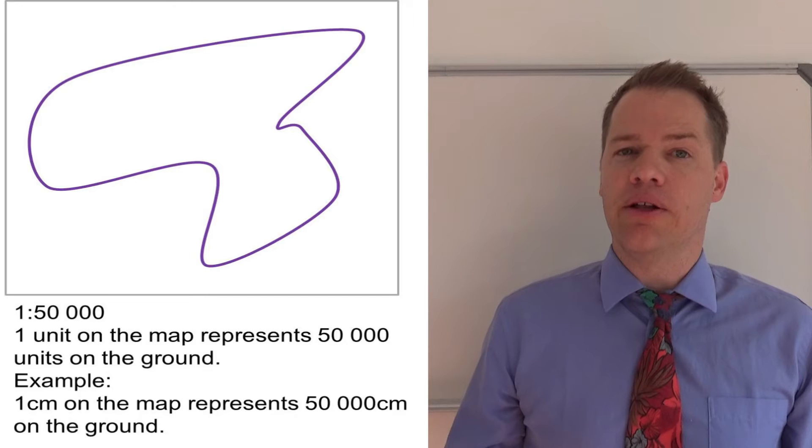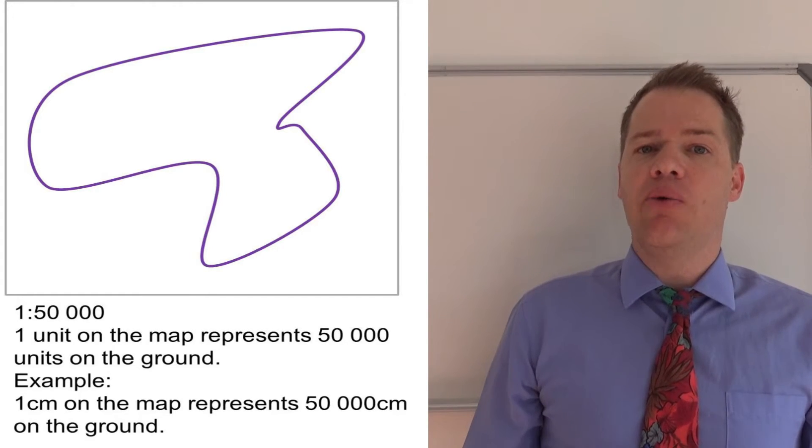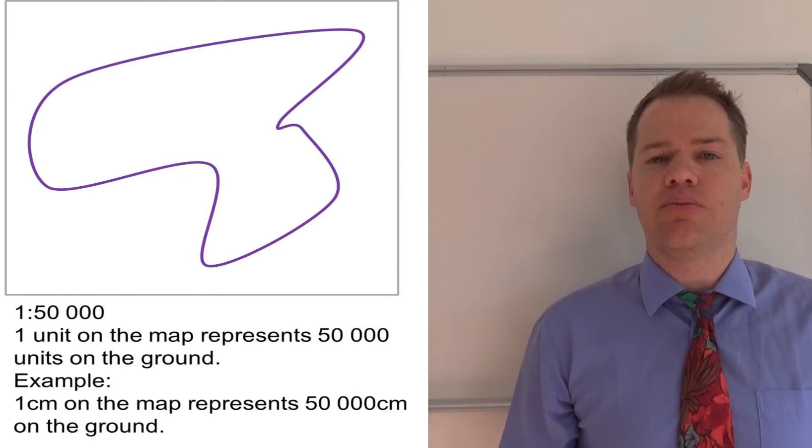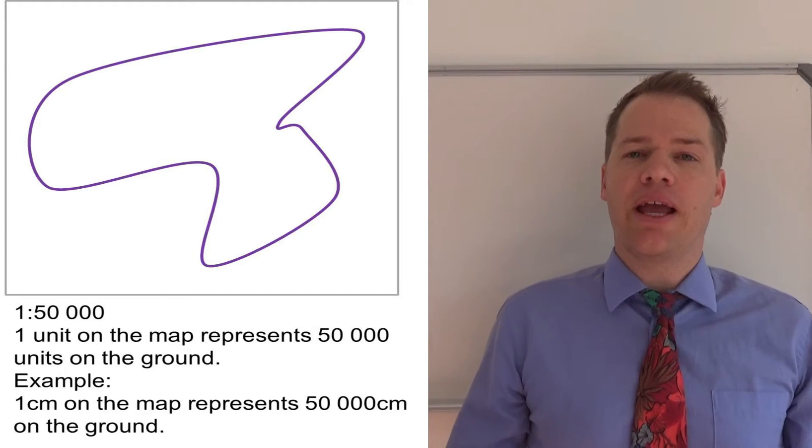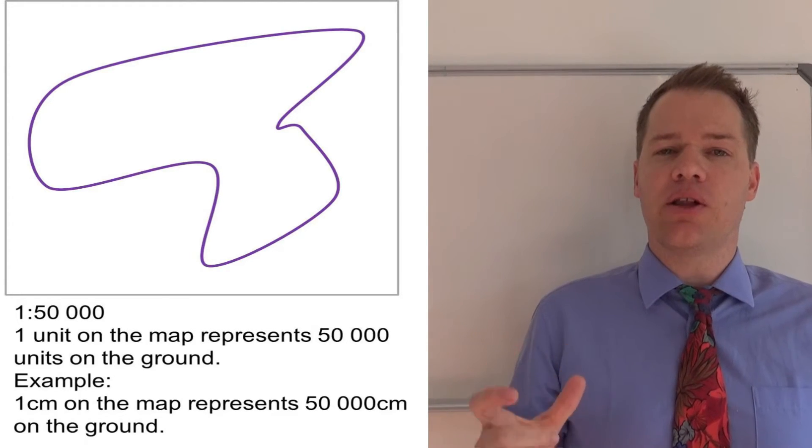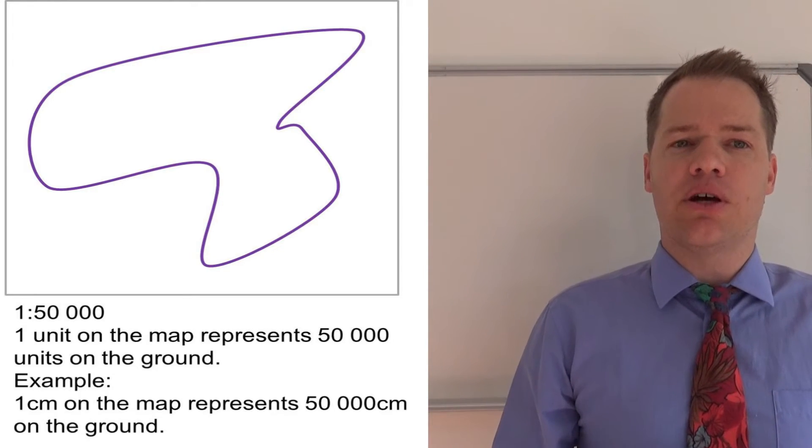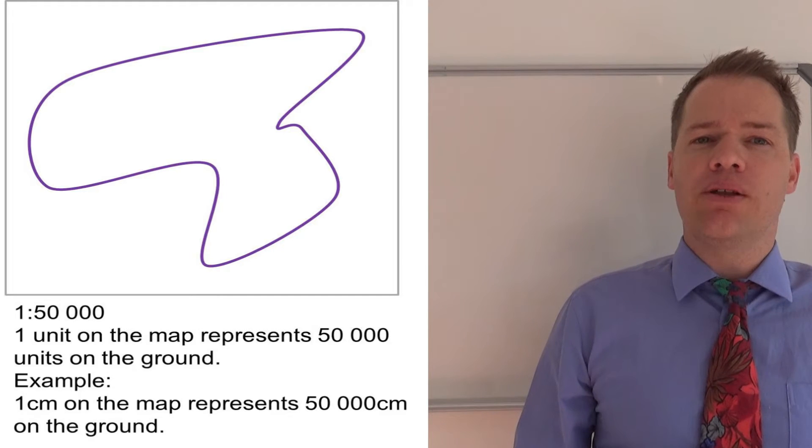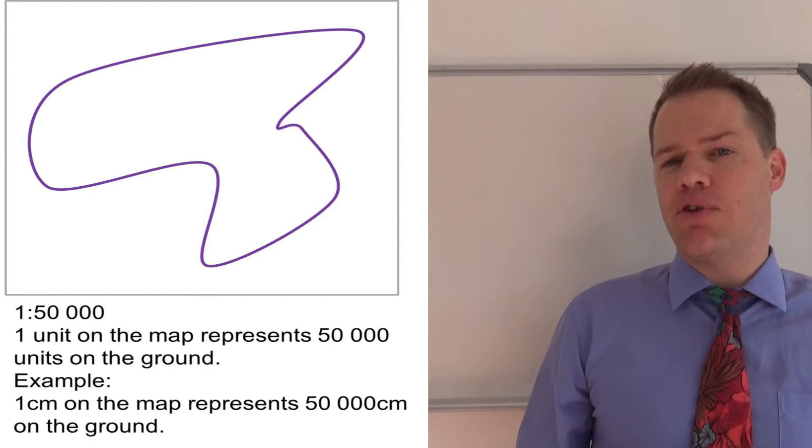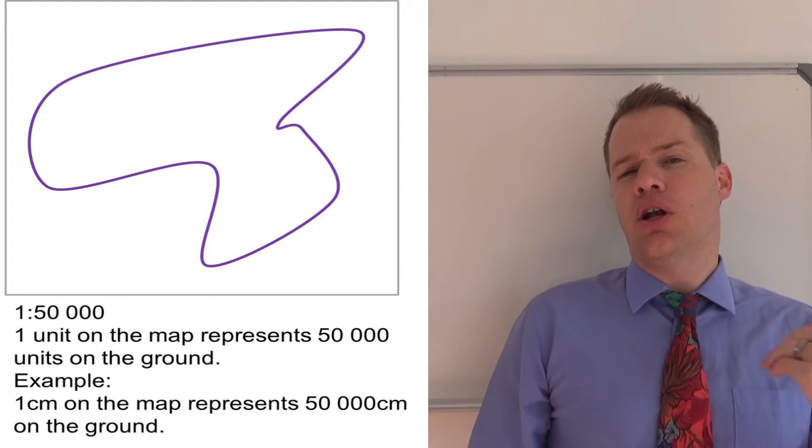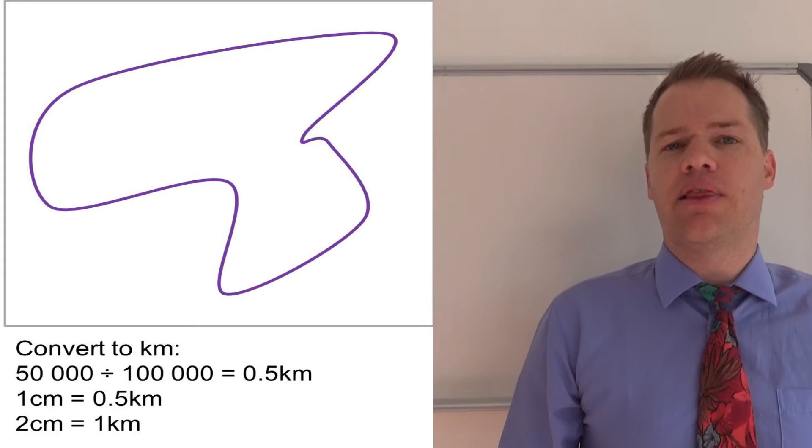So what the scale tells you is one centimeter on the map represents 50,000 centimeters on the ground or in real life. Okay, so now we need to convert this to kilometers because we want to work in square kilometers and so we need to calculate how to draw that square kilometer on the piece of paper.